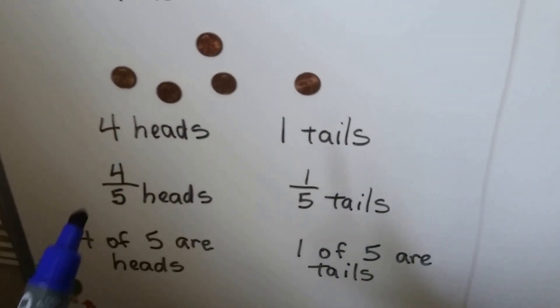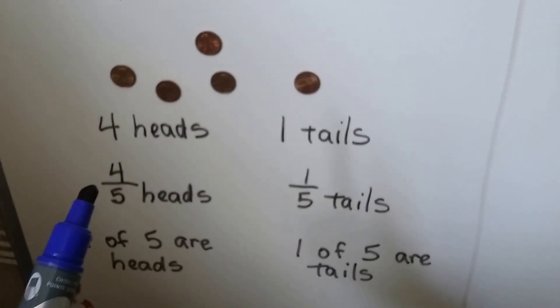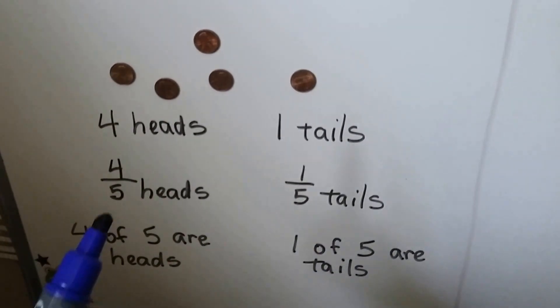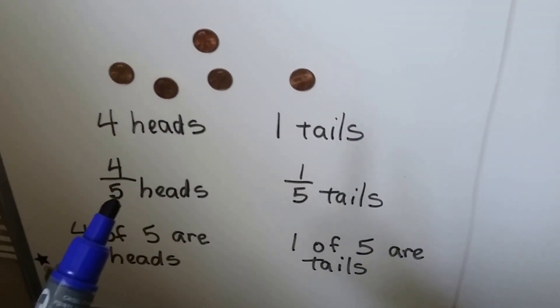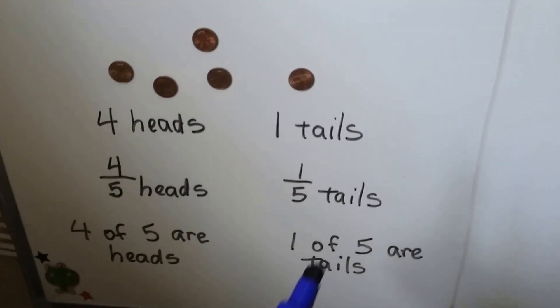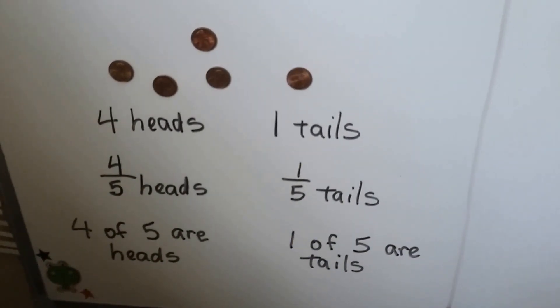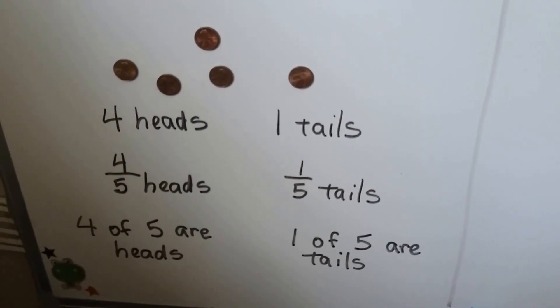Find how many are heads and how many are tails, then what's the fraction of heads of the group and what's the fraction of tails of the group.